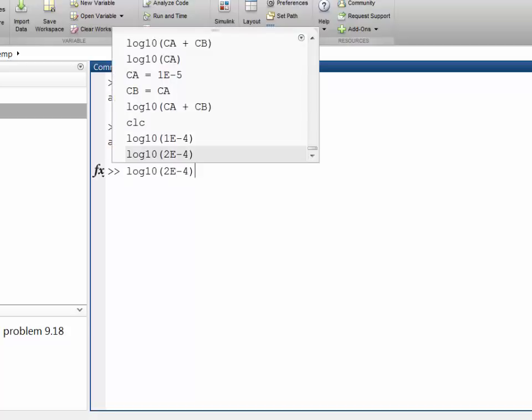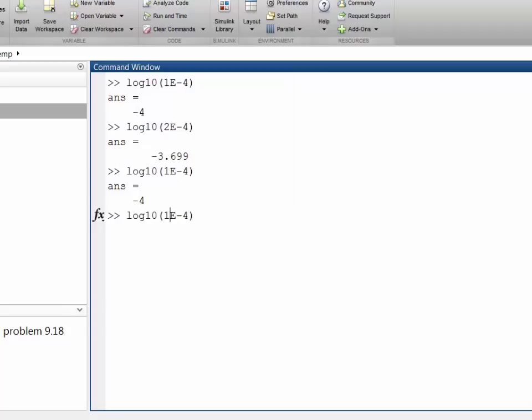What if we had 10 to the minus 5? And let's double 10 to the minus 5. That shifts up to minus 4.7. So you see, no matter what we double on the log scale, it's shifting up by 3 tenths of a unit. So that's convenient for us when we're thinking about the plot.